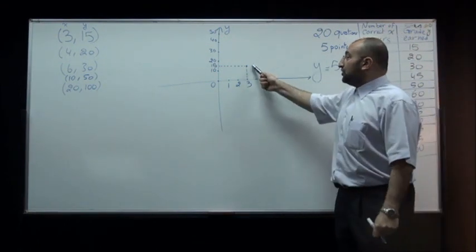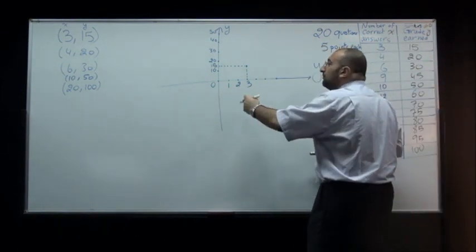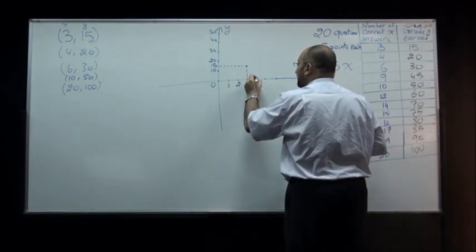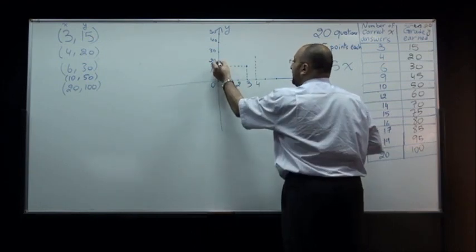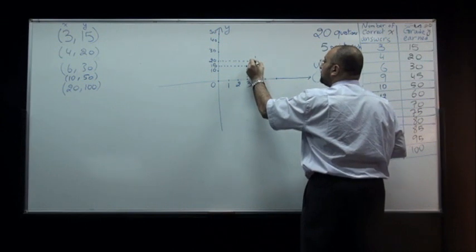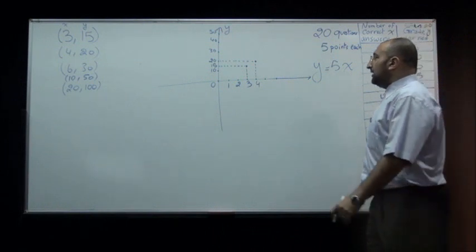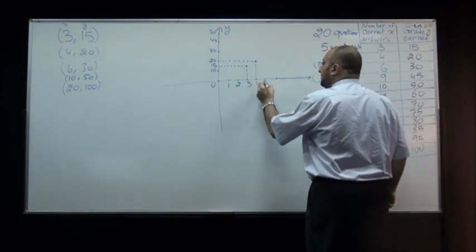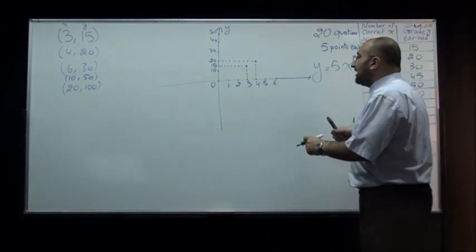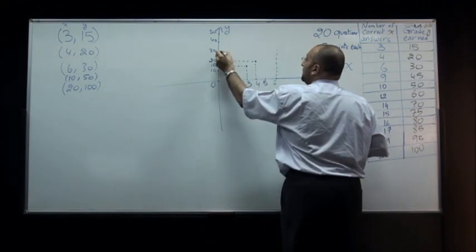And so if we continue to plot more of those points, like the point 4 comma 20, so again I draw a vertical line from here and a horizontal line from there. Where those two lines meet, I'll get the point 4 comma 20. And then I'll continue doing that for 5 and for 6, etc., etc. And then once I end up with those points, so we have 6 and 30.